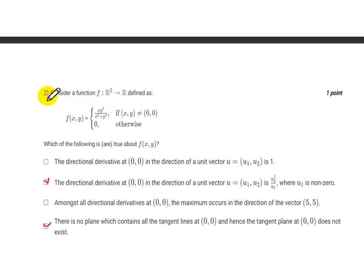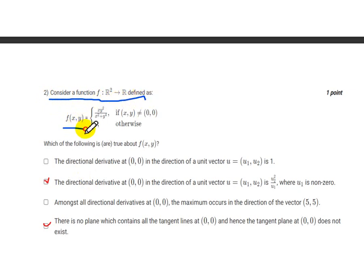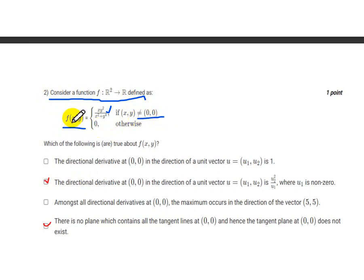Question number 2: consider the function f: ℝ² → ℝ defined as f(x,y) = xy²/(x² + y⁴) if (x,y) ≠ (0,0), and f(x,y) = 0 otherwise. We need to determine which of the following conditions is true about f(x,y).